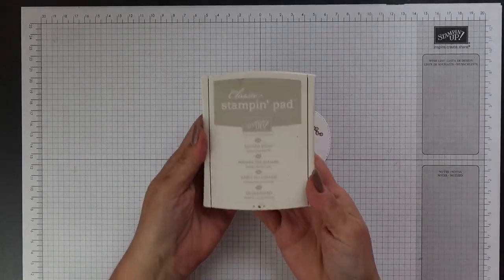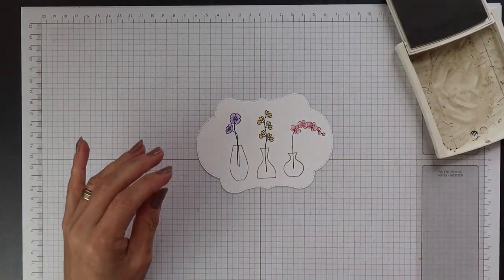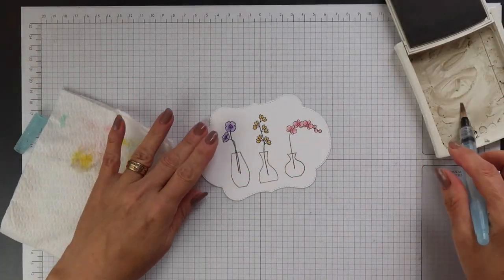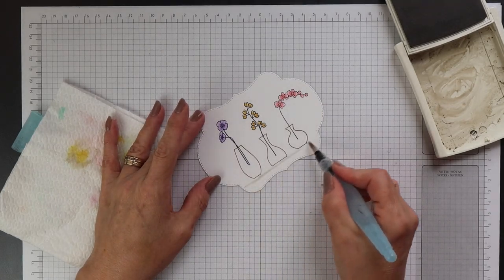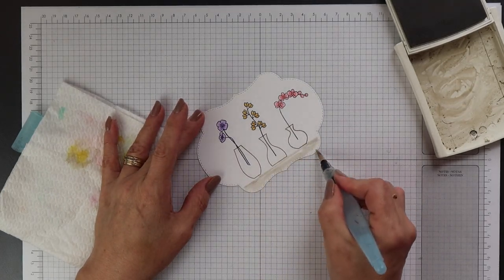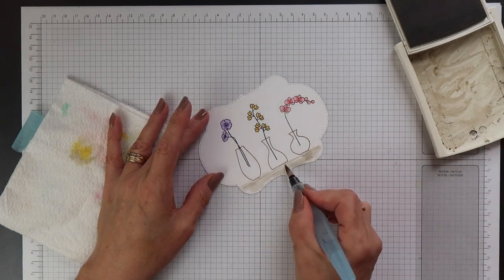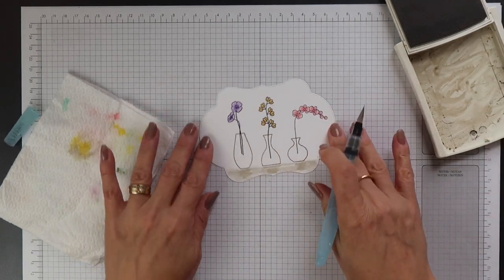I forgot to ground my vases onto something when I was doing my colouring. So I'm just going to use my Aqua Painter and my Sahara Sand ink just to add a little colour underneath the vases so they look like they're sat on something.